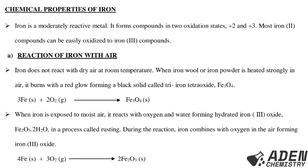Next, the chemical properties of iron. Iron is a moderately reactive metal. It forms compounds in two oxidation states: +2 and +3. Most iron(II) compounds can be easily oxidized to iron(III) compounds.